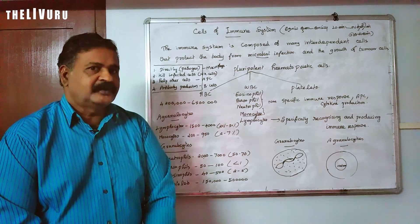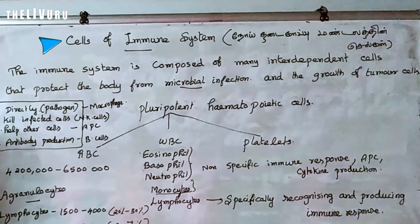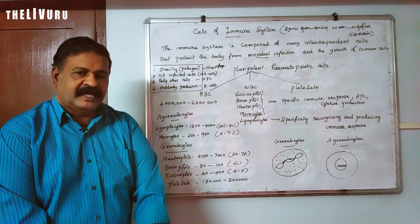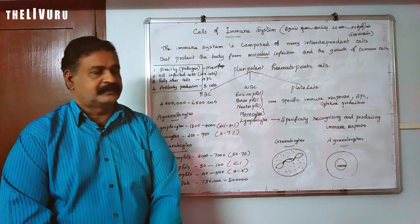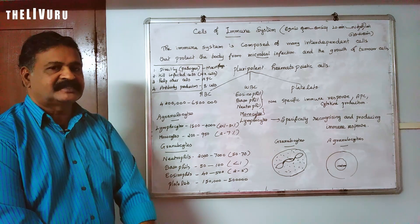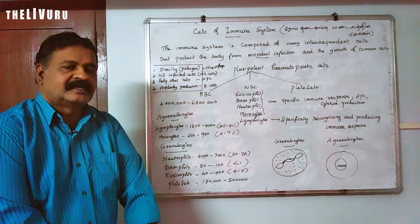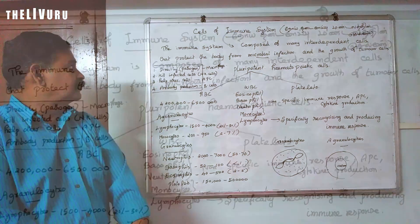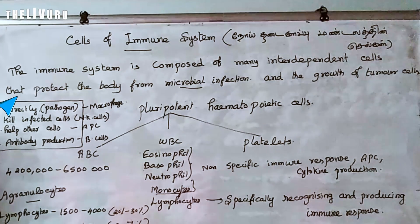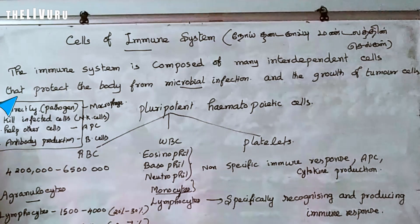In this video, we are going to see about Cells of the Immune System. The immune system is composed of many interdependent cells that protect the body from microbial infection and growth of tumor cells.